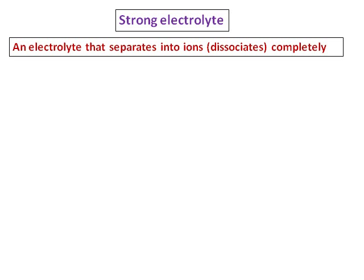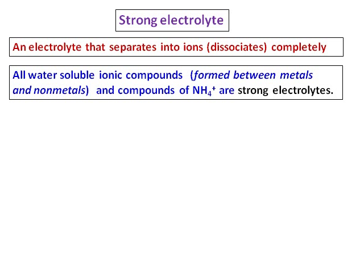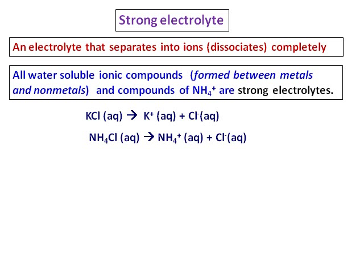Among electrolytes we have strong electrolytes. An electrolyte that dissociates completely into ions will be a strong electrolyte. Water-soluble ionic compounds — formed between a metal and a non-metal — and compounds of ammonium ions are strong electrolytes. For example, potassium chloride dissociates completely into K+ and Cl- ions. Similarly, ammonium chloride dissociates completely into ammonium ions and Cl- ions, making these strong electrolytes.